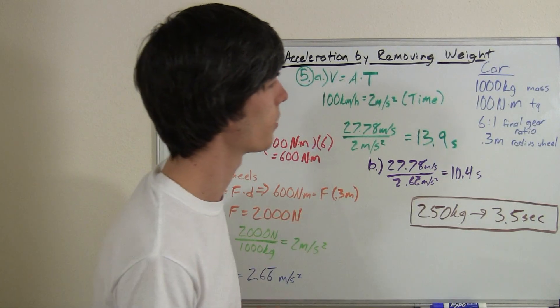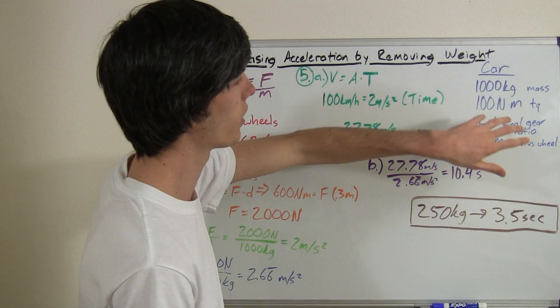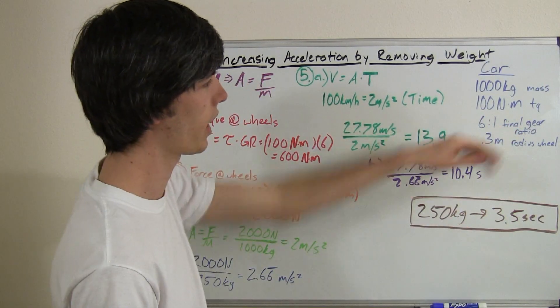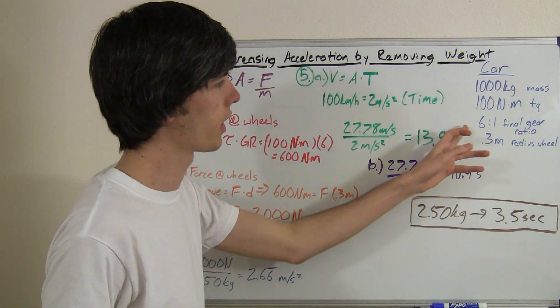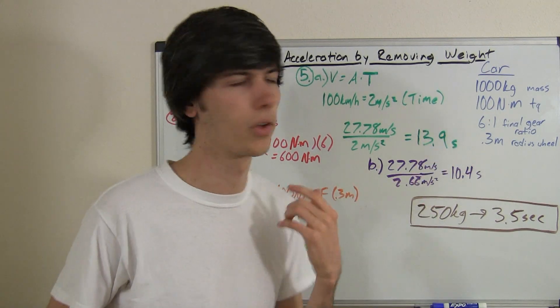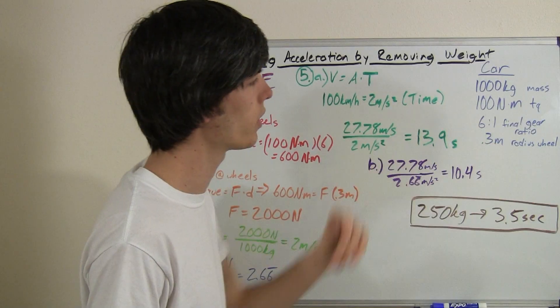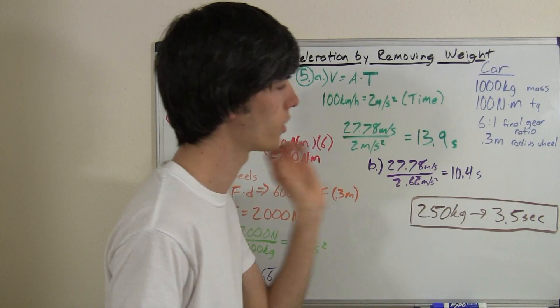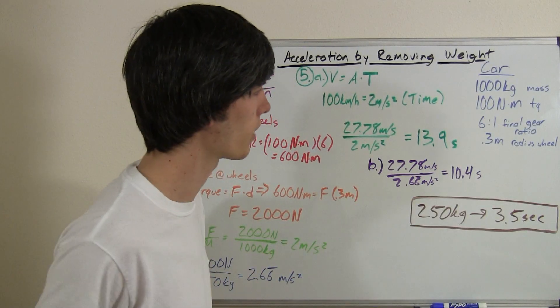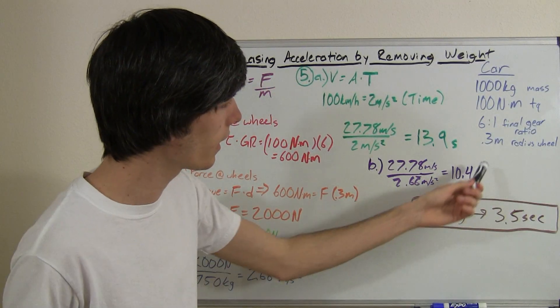Well, I mean, I guess it could be somehow if you did weird things. But the point is, just to simplify it, it's just going to have 100 newton meters of torque across the entire rev range. It's going to have a 6 to 1 final gear ratio. So that means it could have a 3 to 1 first gear and a 2 to 1 differential.